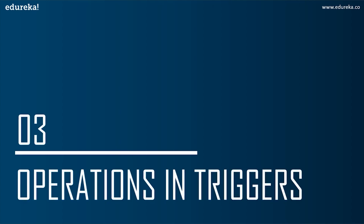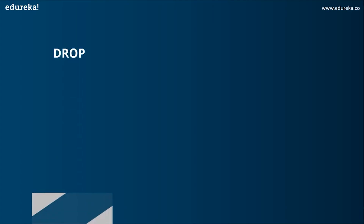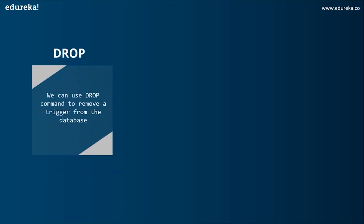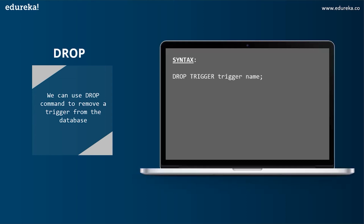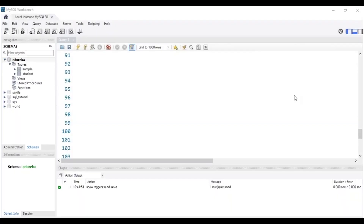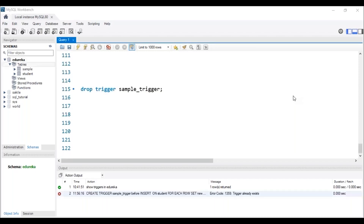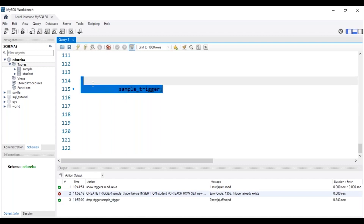The next topic is operations in triggers. The first operation is DROP. We can use the DROP command to remove a trigger from the database. The syntax is: DROP TRIGGER trigger_name. Let's head to MySQL Workbench to execute this. The trigger has to be present in our database. After executing this query, we can see in the status bar that the trigger with the name 'sample_trigger' has been dropped.